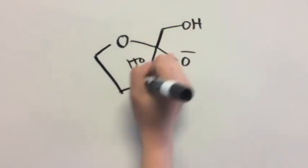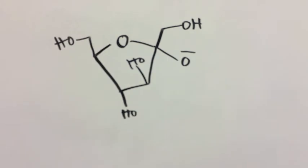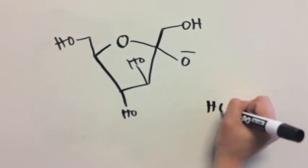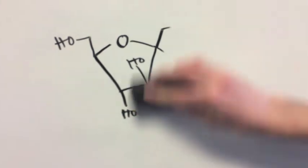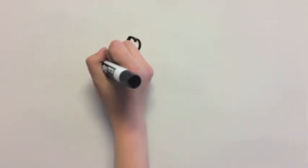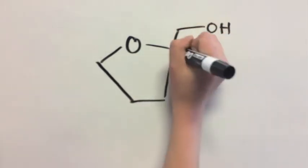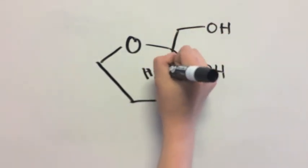Now we're almost there, but for this final step, this negative oxygen will deprotonate a passing water molecule. And you guessed it, we have successfully formed fructopyrinose from glucopyrinose.